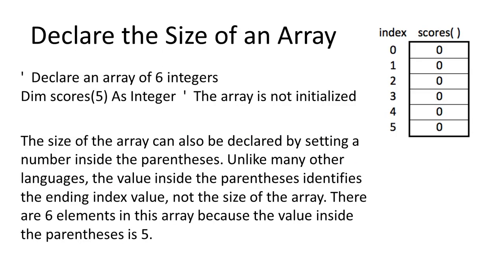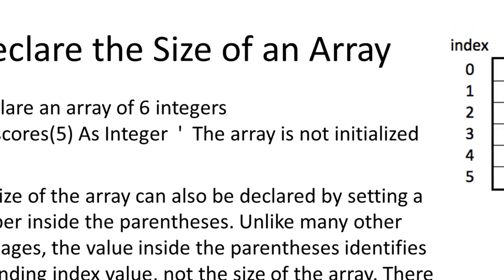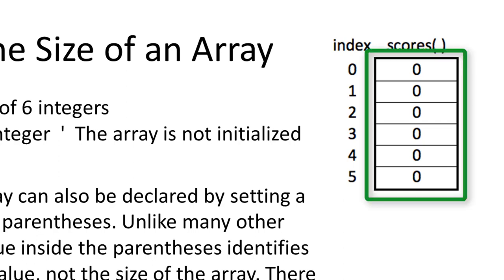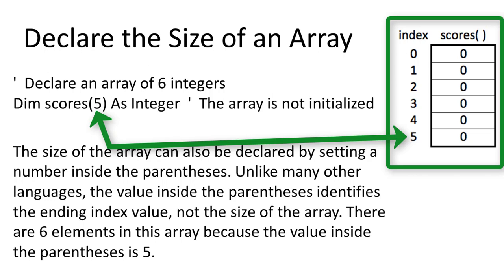The size of the array can also be declared by setting a number inside the parentheses. Visual Basic automatically sets array elements to 0 for numeric data types such as integer or double, or to empty strings if the array is declared as type string. Unlike many other languages, the value inside the parentheses identifies the ending index value, not the size of the array. There are 6 elements in this array because the value inside the parentheses is 5 — I always need to remember this when programming in Visual Basic.